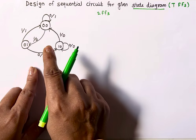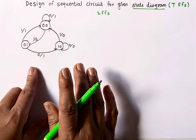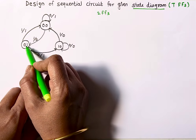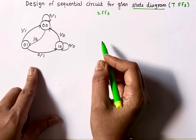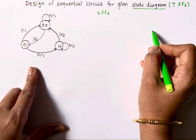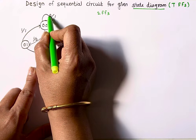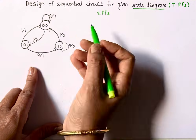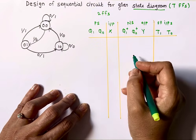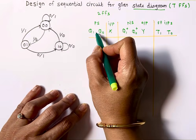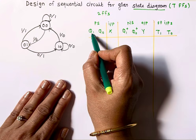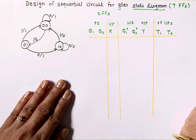The very first step is to write the state table from the state diagram. In the state table we use present state, present input, next state, and output. The left-hand side of the slash is input and the right-hand side is output. Present states are Q1 and Q0 — since I need two flip-flops, I'll have two outputs Q1 and Q0. This is my input X.